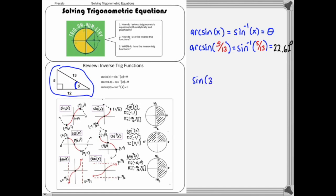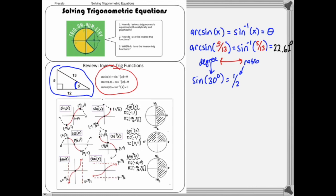Let's look at how this differs from regular sine. Sine of 30 degrees equals 1/2 — we drop in an angle and get out a ratio. Since these are inverses, the inputs and outputs switch. For arc sine, we drop in a ratio and it fetches us a degree. That's powerful, especially for unusual values like 5/13.